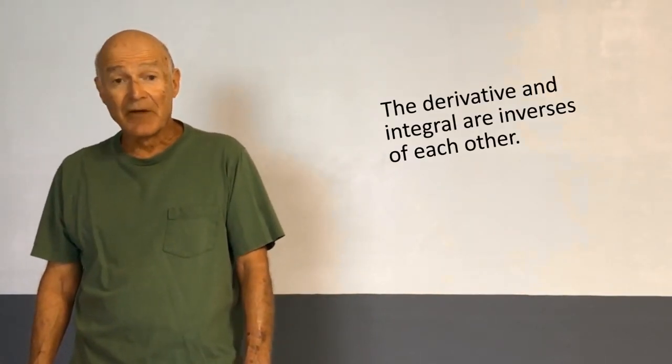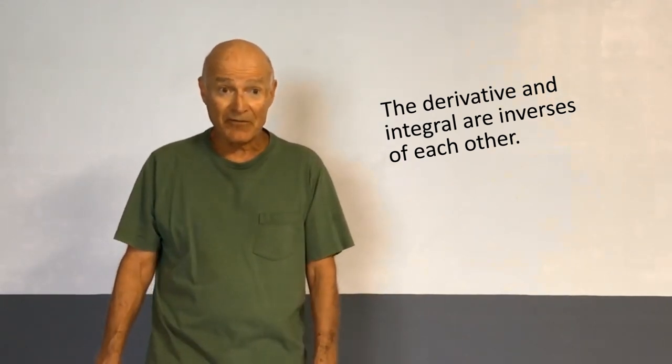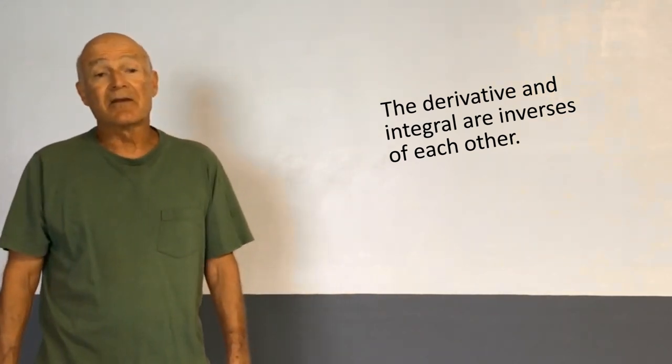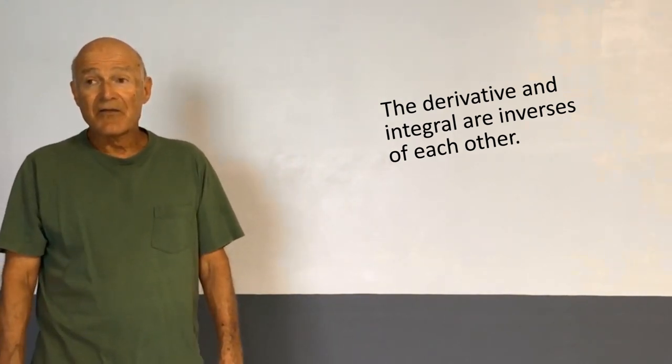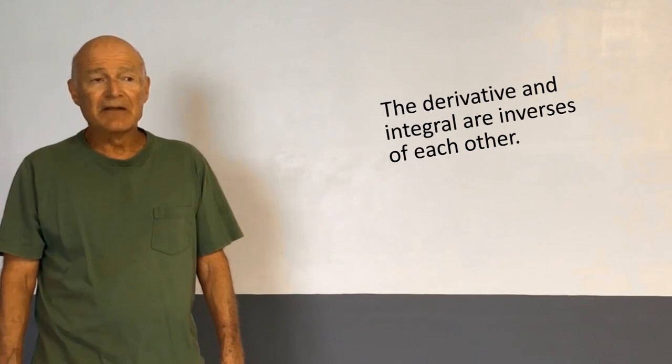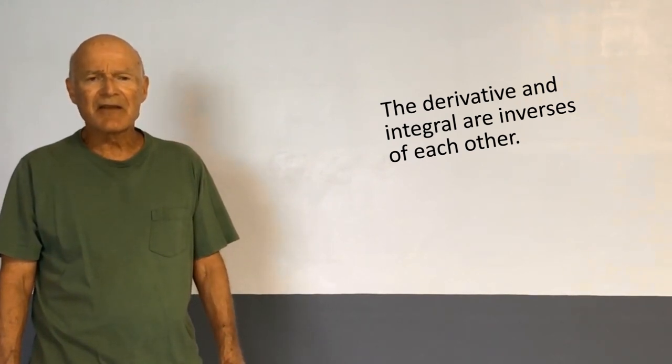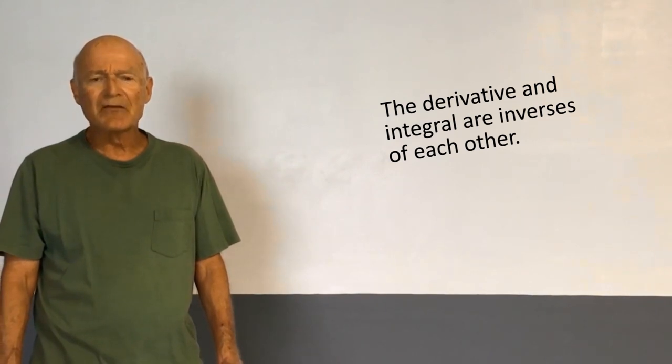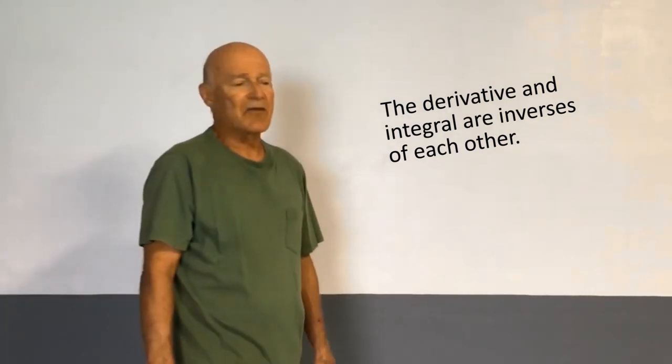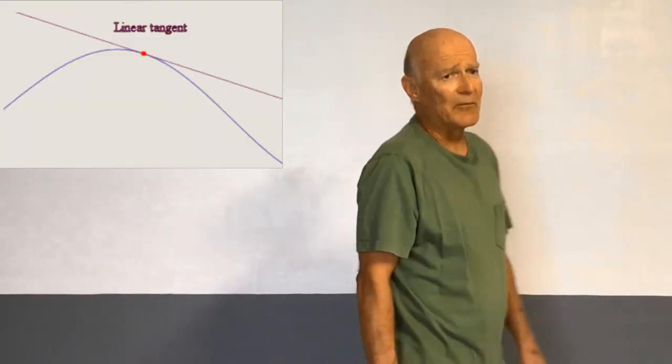First of all, the bi-geometric calculus has a derivative and an integral, just like the classical calculus that you've probably studied before. The derivative and integral are kind of inverses of each other. They undo each other in a similar way that the classical integral and classical derivative undo each other.